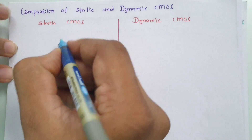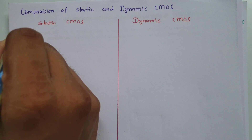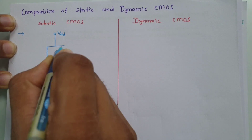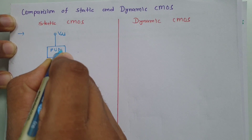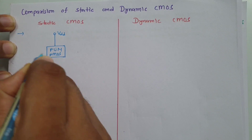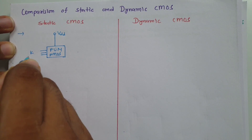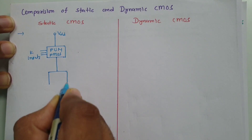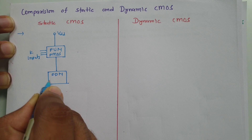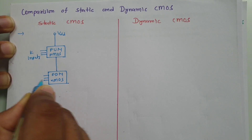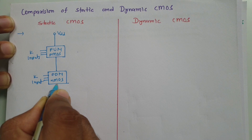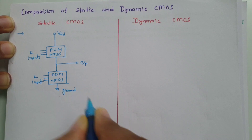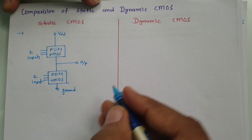When we talk about static CMOS, in its structure we have VDD at the top. After that we have a pull-up network, which is made up of PMOS that can have K inputs. Then we have a pull-down network, which is made up of NMOS that can also have K inputs. This is connected to ground, and here we take the output. So this is the basic structure of static CMOS.